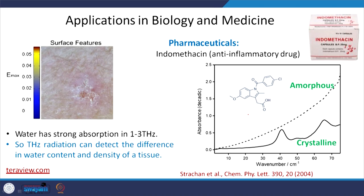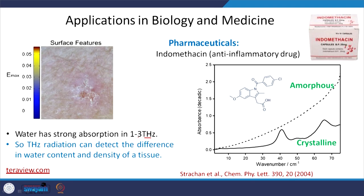Terahertz is used in biology and medicine as well. Because water has strong absorption in the 1 to 3 terahertz range, terahertz radiation can detect differences in water content. If two tissues have different water content, surface profiling can convert this into an image showing surface features. For example, if a hand has inflammation, the water content will differ from normal tissue, and this can easily be detected using terahertz imaging.